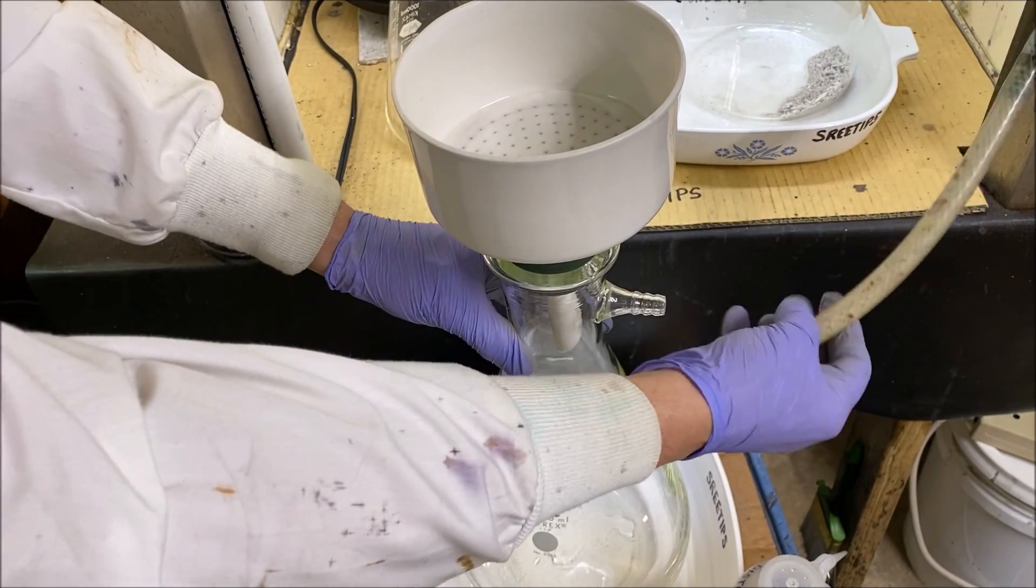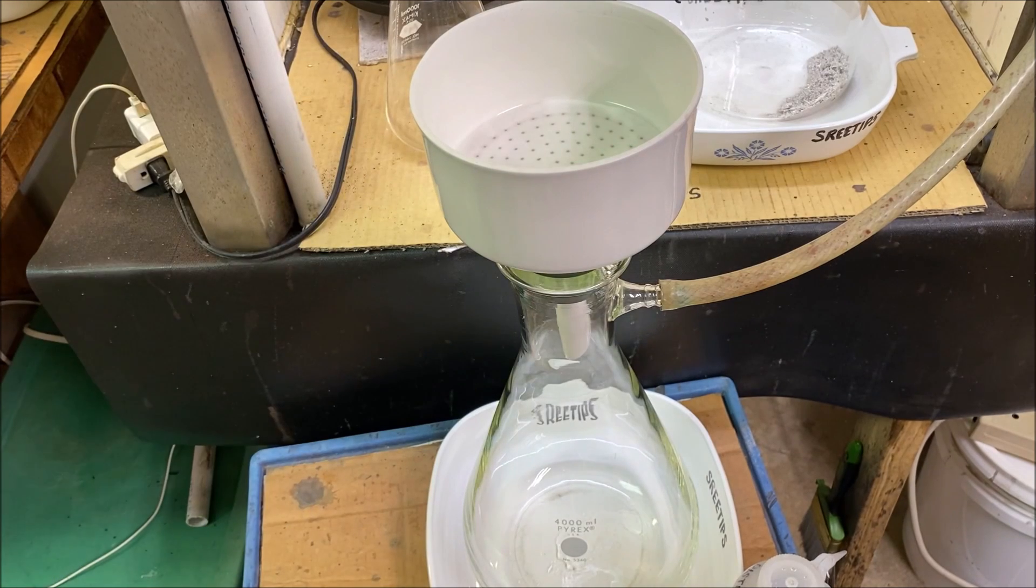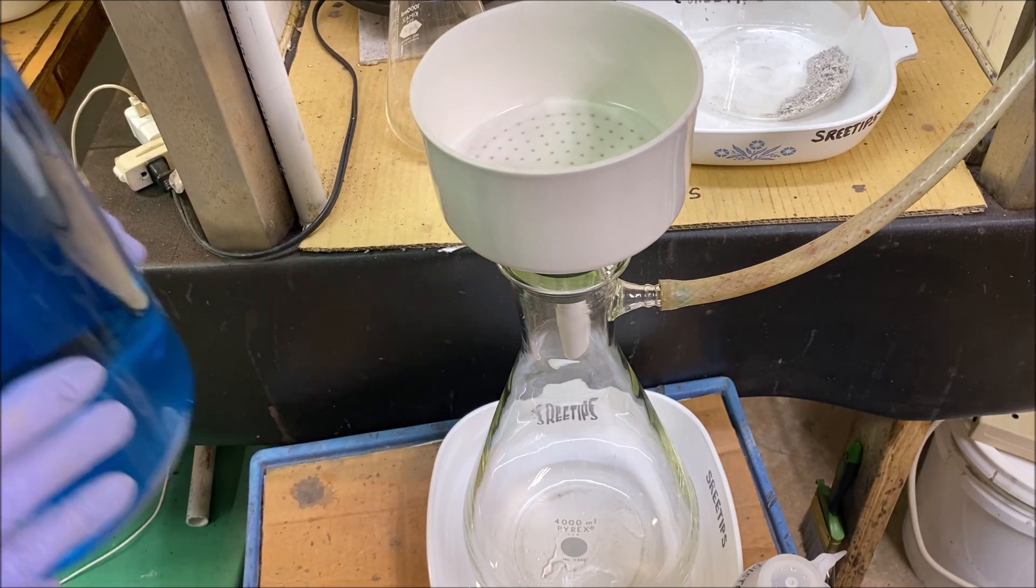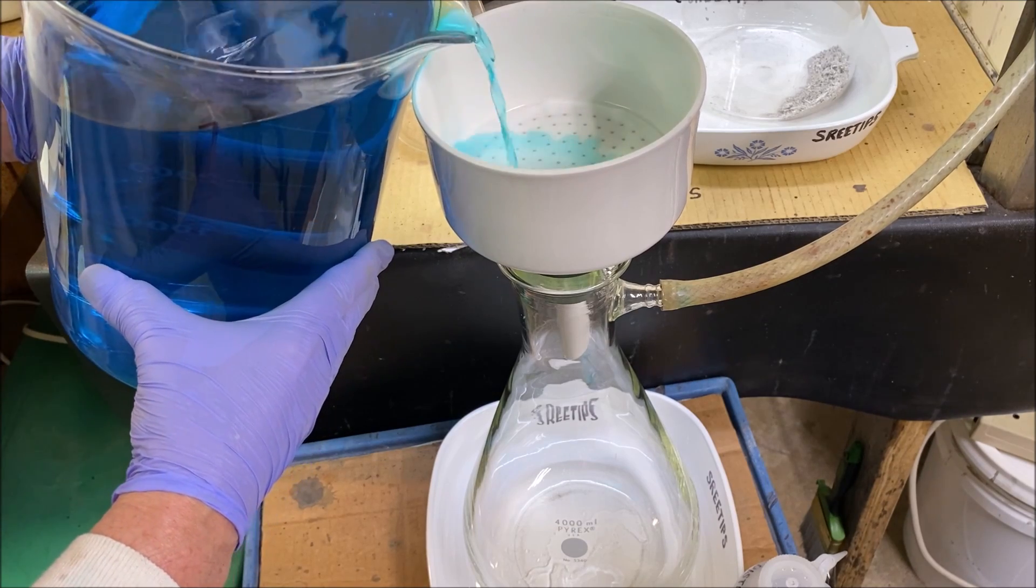I know I said I wasn't going to do it, but I think what I'll do is go ahead and filter the used electrolyte from the first six liter silver cell run. I'm going to use some of this for this run.